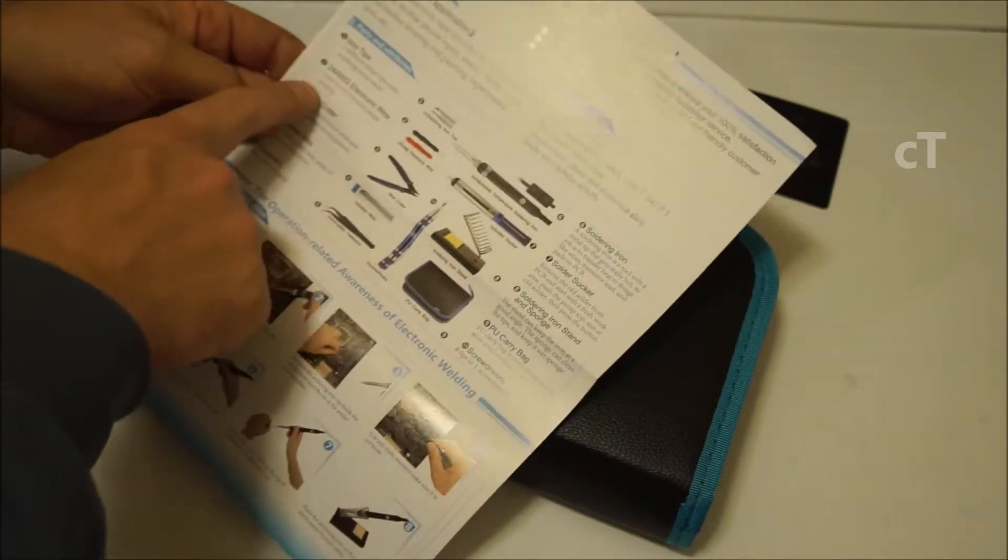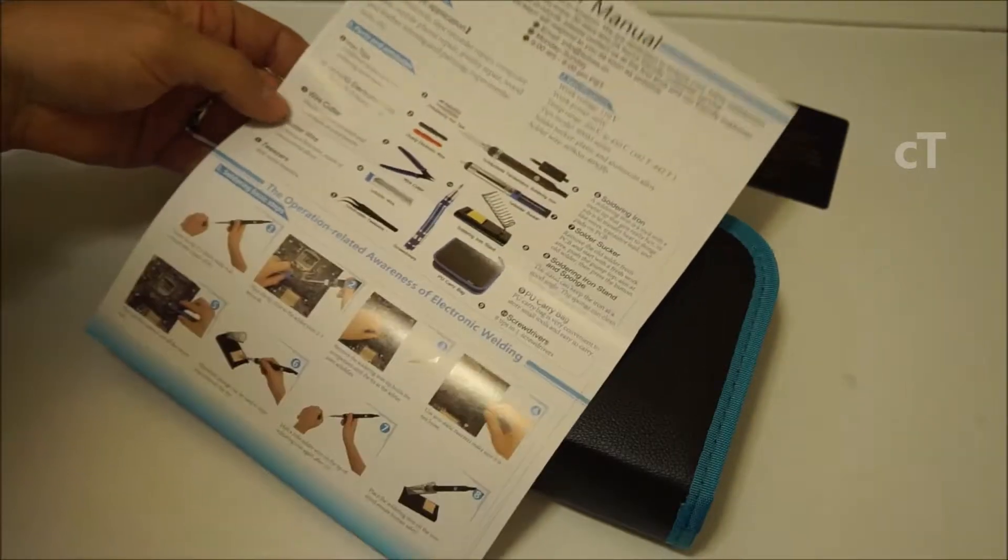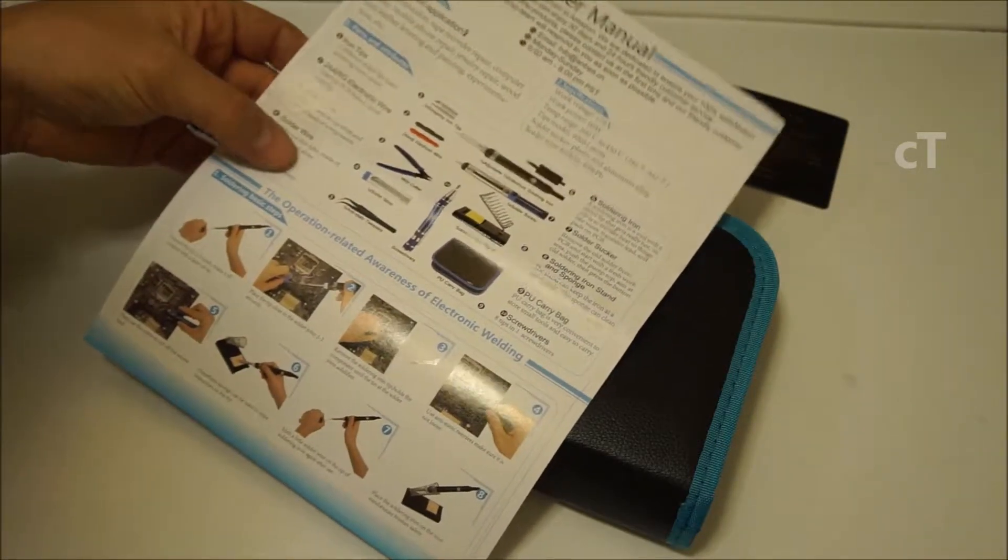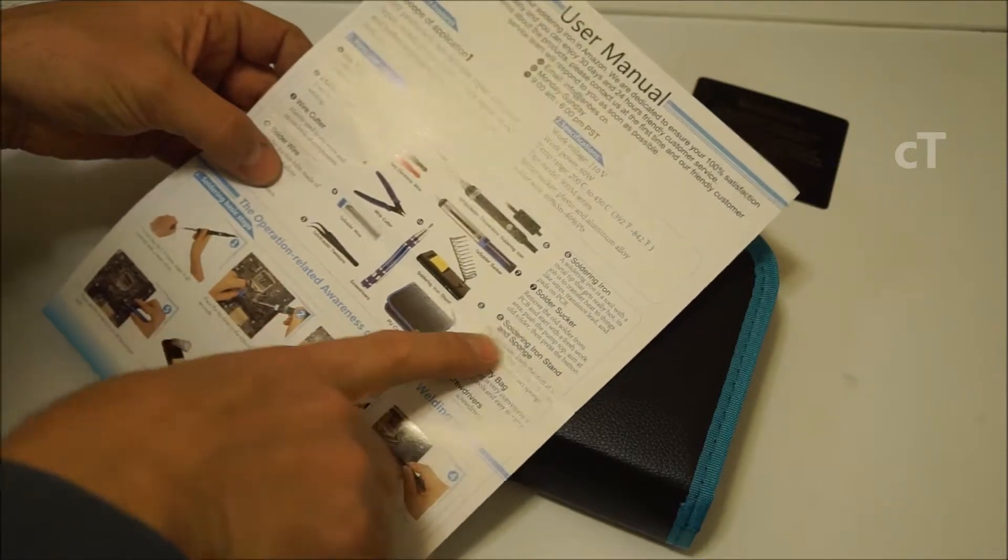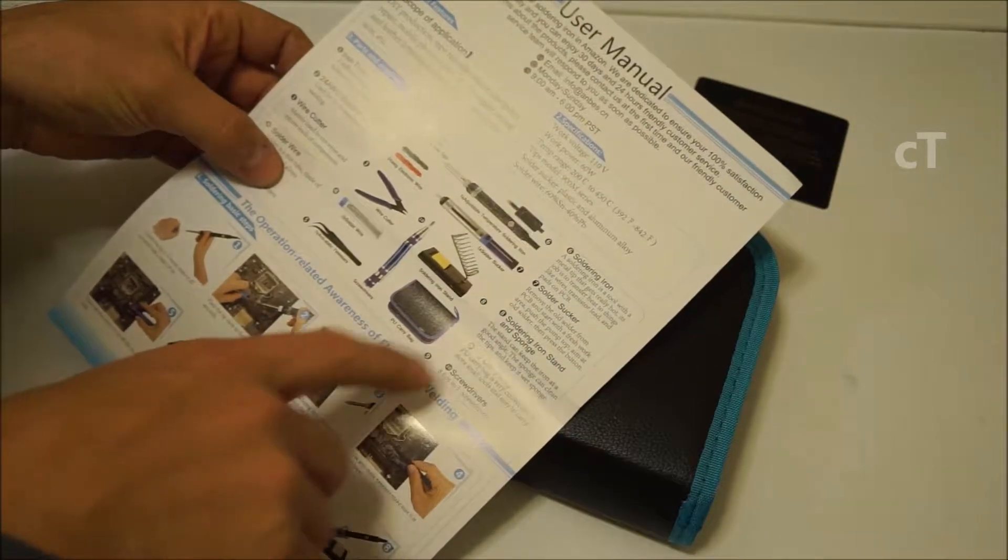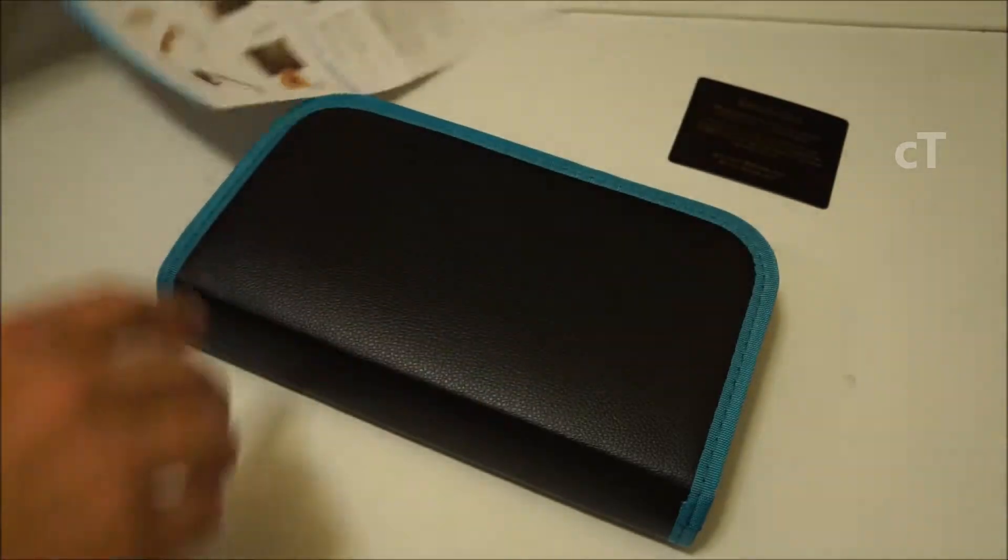Different things included: tips, some wire, wire cutter, soldering wire, tweezers, soldering iron, solder sucker, stand, sponge, and screwdrivers. And then a little carrying case.